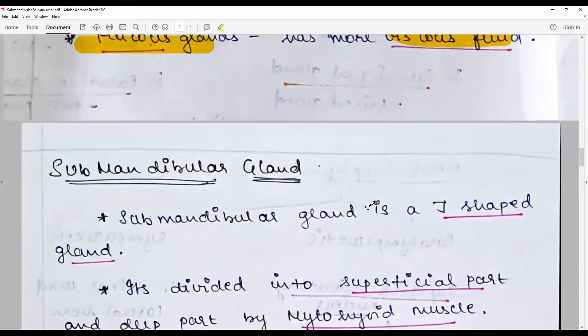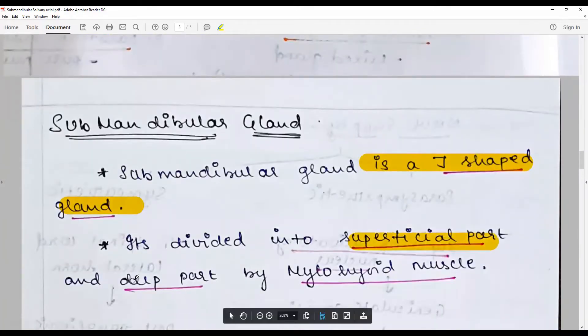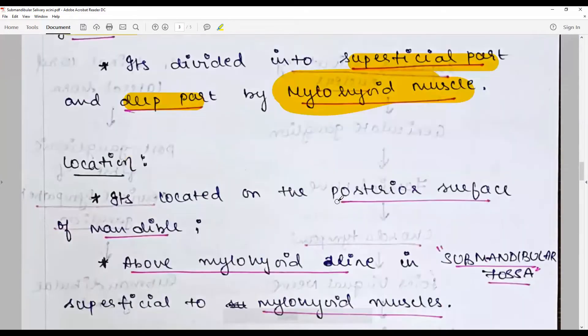The submandibular salivary gland is a J-shaped gland divided into a superficial part and a deep part by the mylohyoid muscle. Location: it is in the posterior surface of the mandible, above the mylohyoid line, in the submandibular fossa, superficial to the mylohyoid muscle.